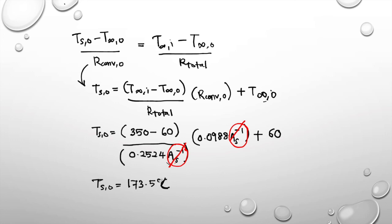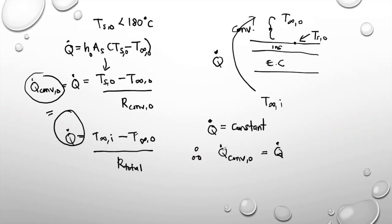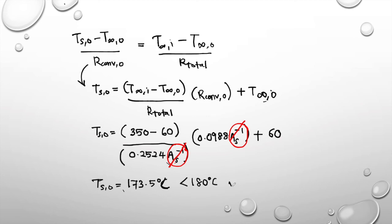The temperature T_s,out of 173.5 degrees Celsius is below 180 degrees Celsius. Therefore, what was suggested by the plant supervisor — increasing the cooling air velocity by 10 percent — is proven effective to prevent fire hazard. That's all for Example 3. Thank you.